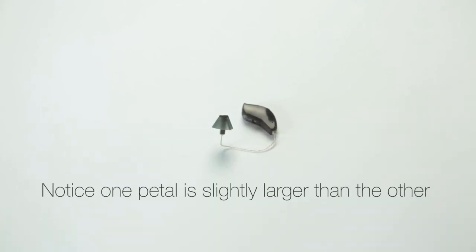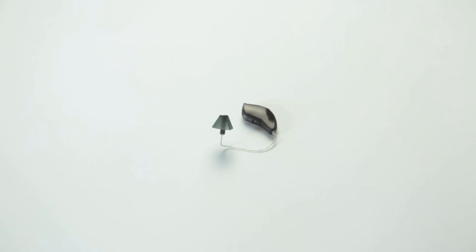Notice one petal is slightly larger than the other. If needed, adjust the tulip dome petals so that the largest petal covers the smaller one. This ensures the most comfortable fit when wearing your hearing aids.